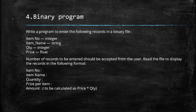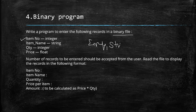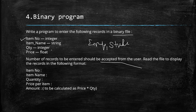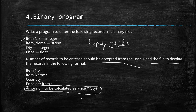This next program is a very important concept — a binary file-related program, one of the hard questions. Write a program to enter the following records in a binary file. This is the same concept as in your NCERT book, but they may also give employee or student records. Item number is an integer, item name is a string, quantity is an integer, price is a float. The number of records to be entered should be accepted from the user.